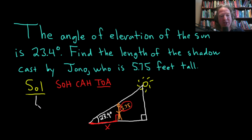We know that the tangent of 23.4 degrees equals opposite over adjacent. The opposite is 5.75, that's the opposite side from the angle, and the adjacent one is X. All we have to do is solve this for X.